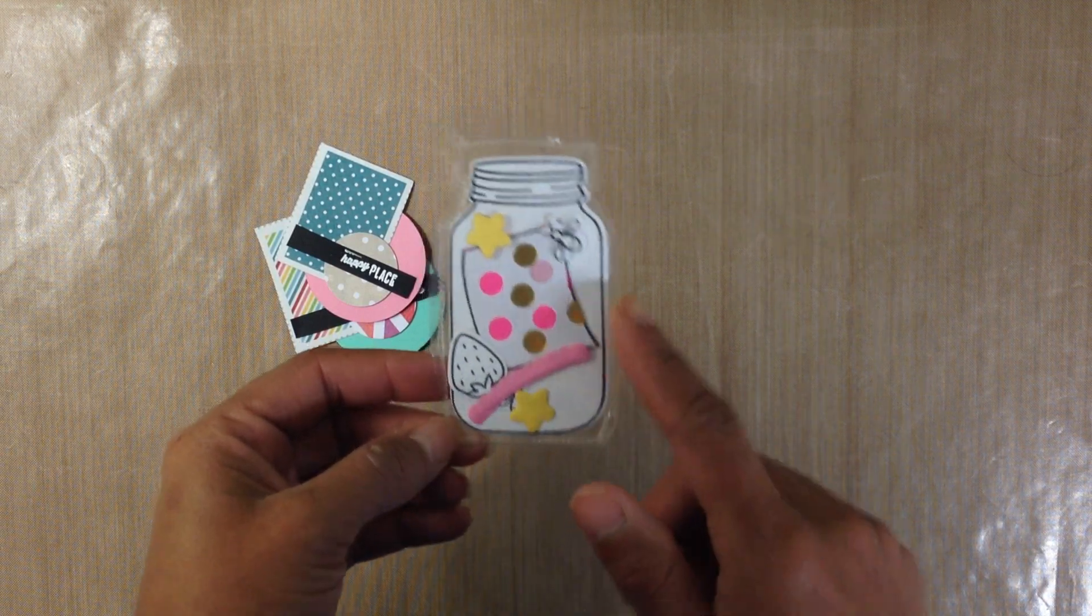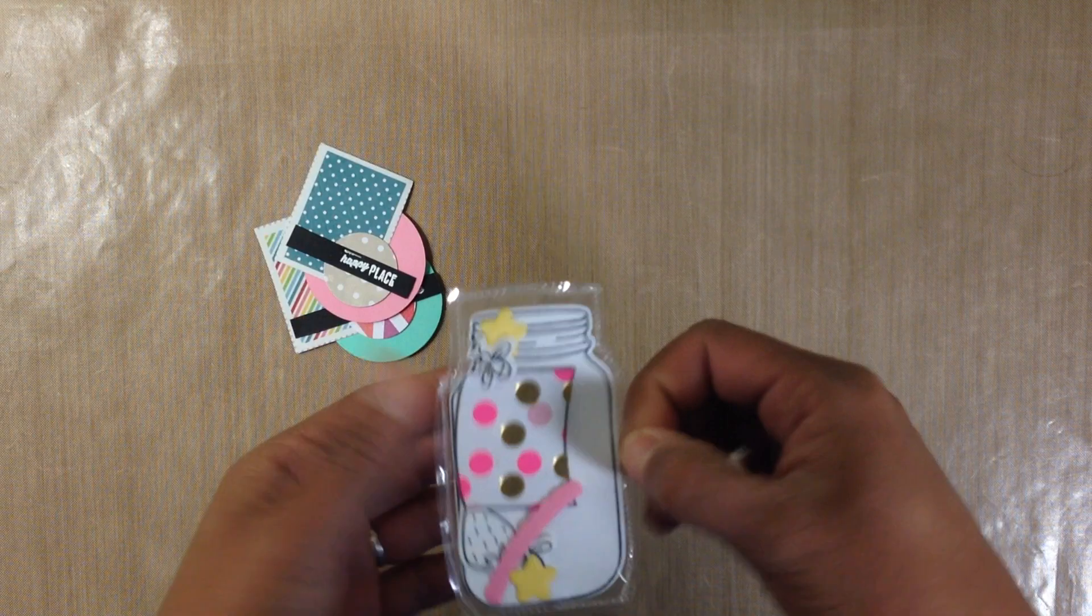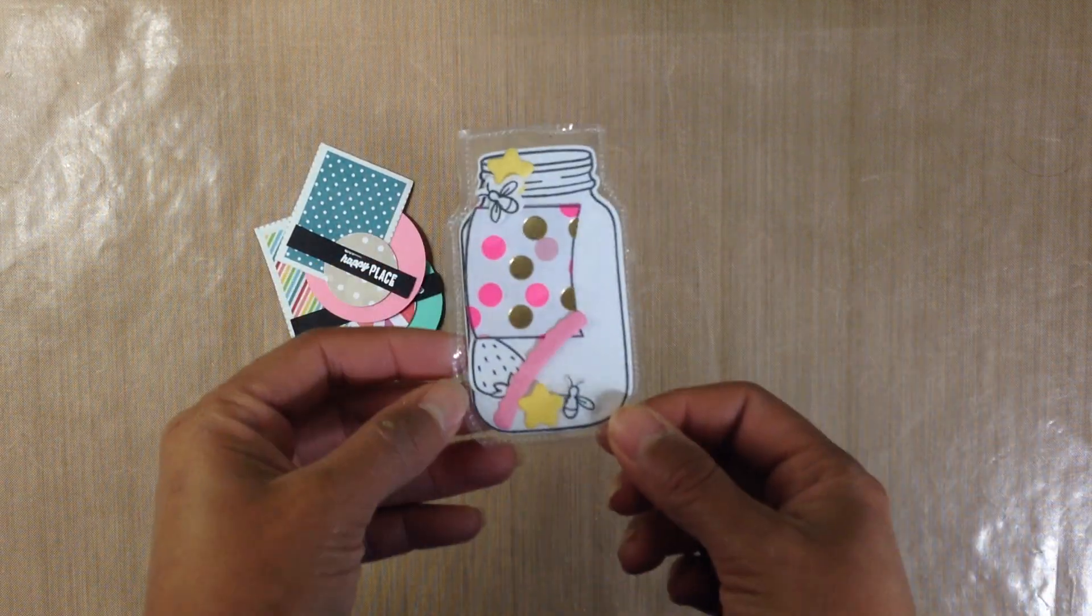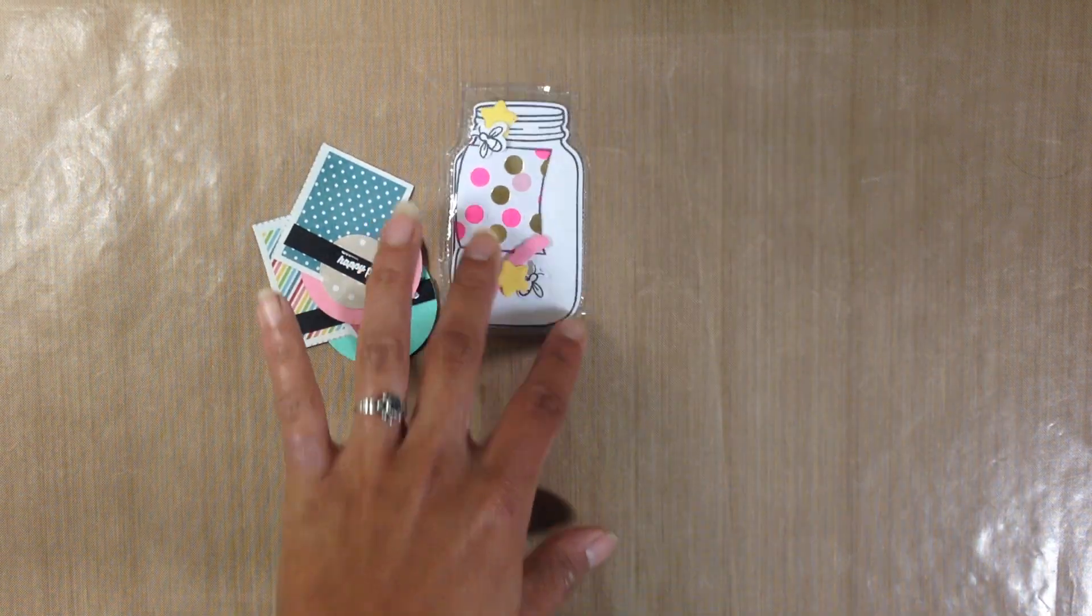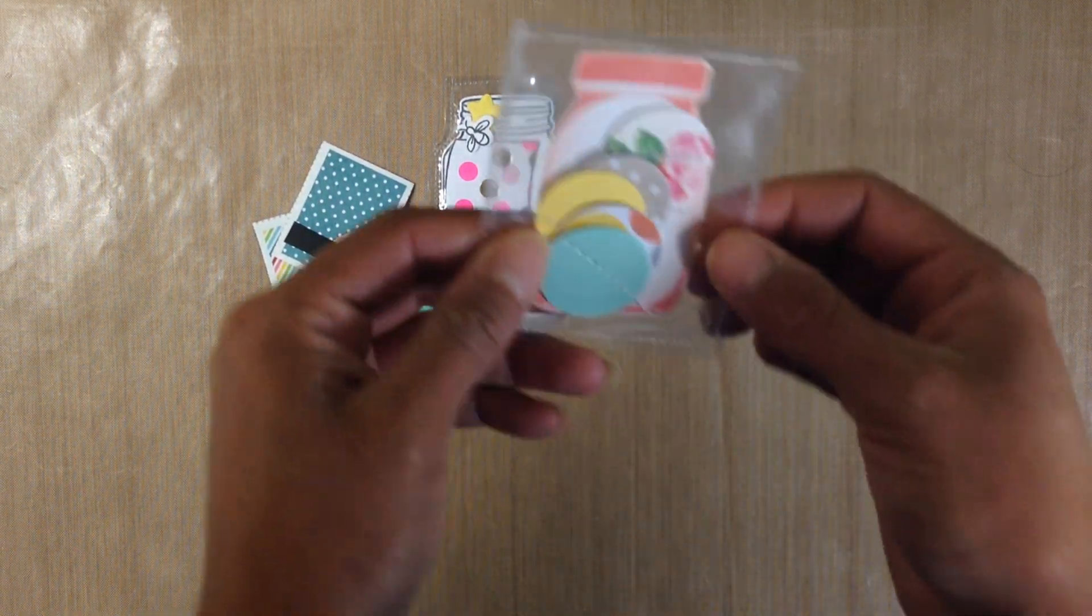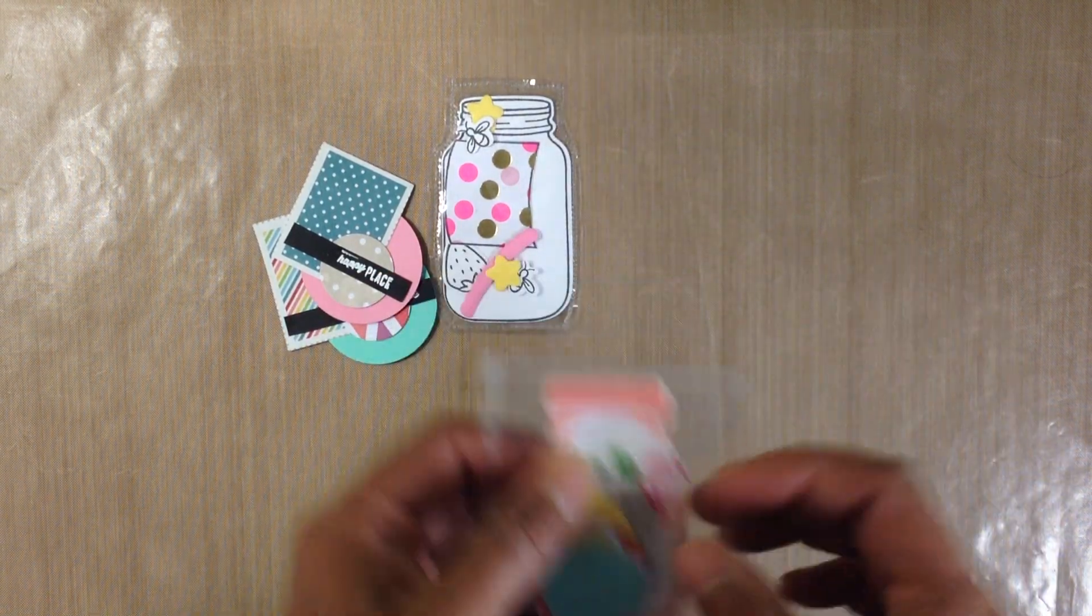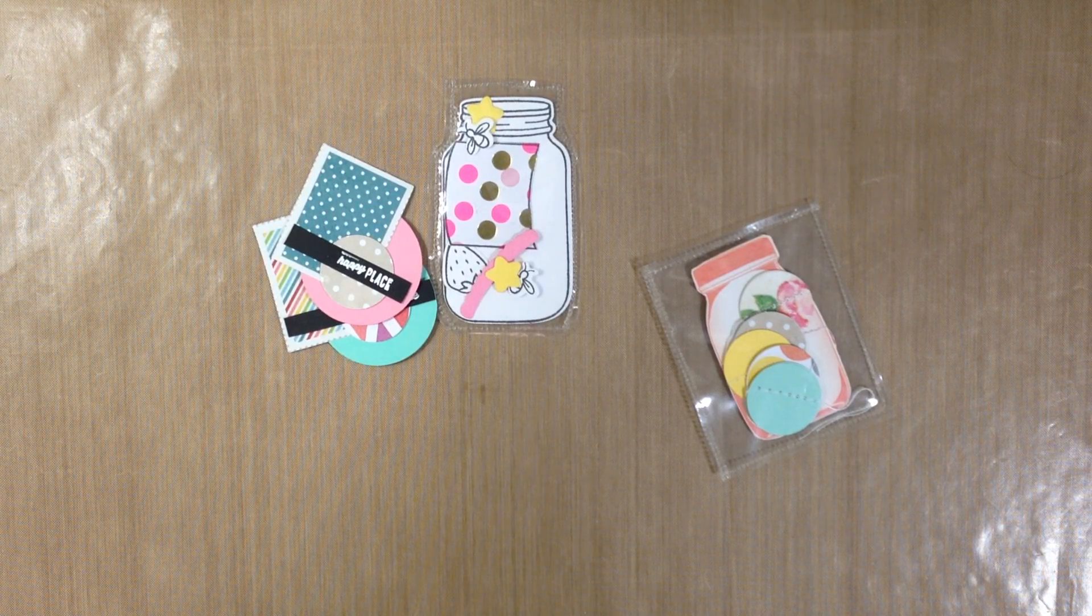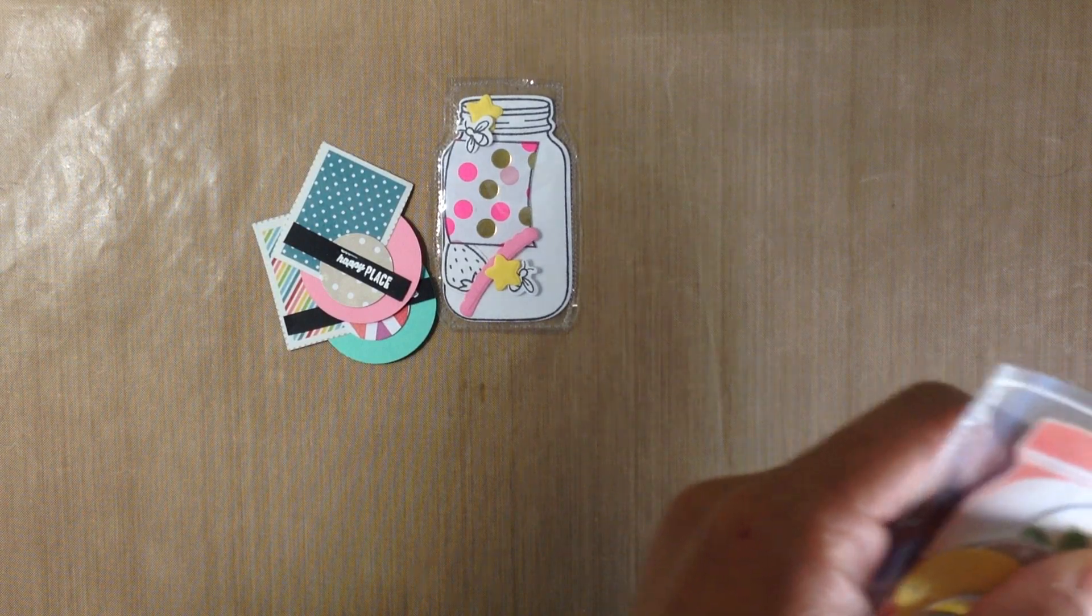It's not the best. I did it in a hurry but I mean if you're gonna make these you can definitely take your time and I use the We R Memory Keepers fuse tool for this so yeah you do have to have a fuse tool if you want to do this one here. And then here's another one and this one I just put it in a clear bag and I fused the top but you don't have to have it in the clear bag. So when you get it you know when you send it to your pocket letter pal you could easily cut it open.